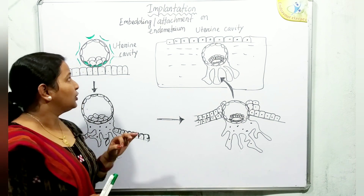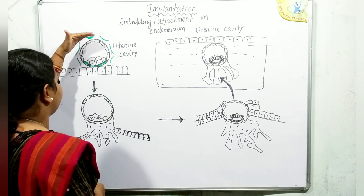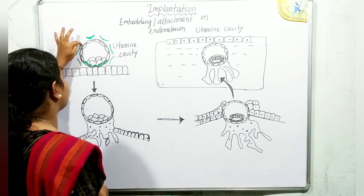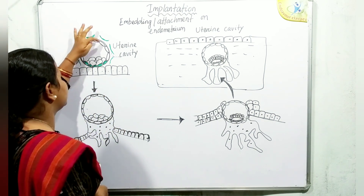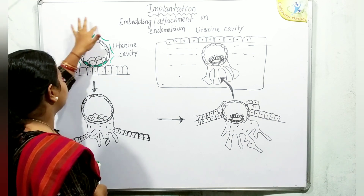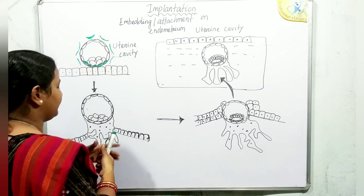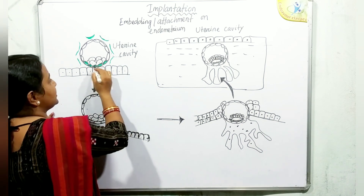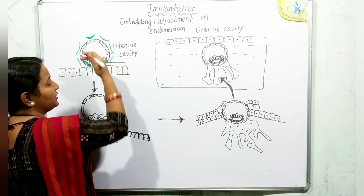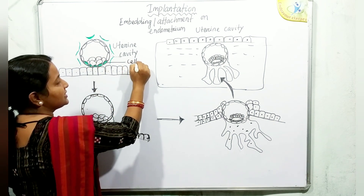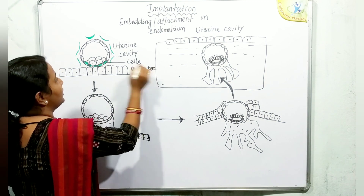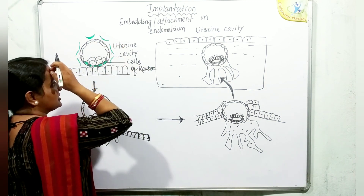After finding a proper implantation site, the trophoblastic cells release proteolytic substances that dissolve the zona pellucida layer. The trophoblastic cells in contact with the inner cell mass are called cells of Rauber.